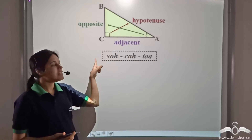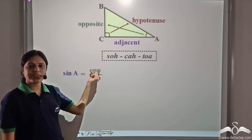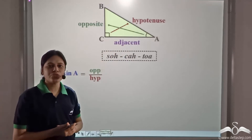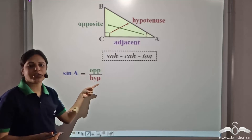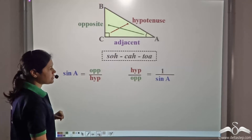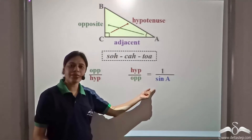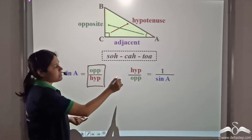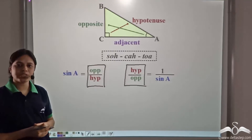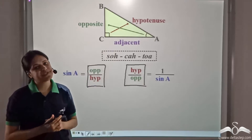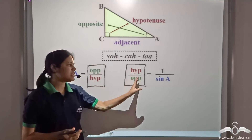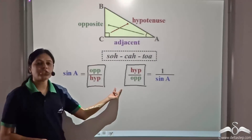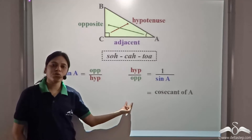From SOH, we have sine of an angle is equal to opposite side by hypotenuse. So, sine of A is equal to opposite by hypotenuse. Now, what if I interchange hypotenuse and opposite in the numerator and denominator? I get hypotenuse by opposite, equal to one by sine A, because this is the reciprocal of this ratio. Since opposite by hypotenuse is constant, the hypotenuse by opposite will also be constant — that is, one by sine A will be constant if sine A is constant. So, even this ratio is constant for a fixed angle A for all right-angle triangles. So, this is also given a special name: that is cosecant of A.